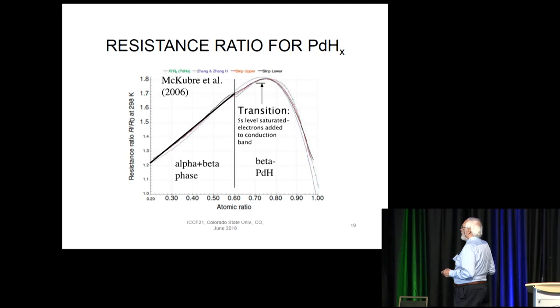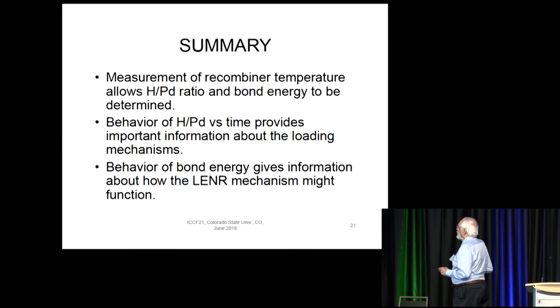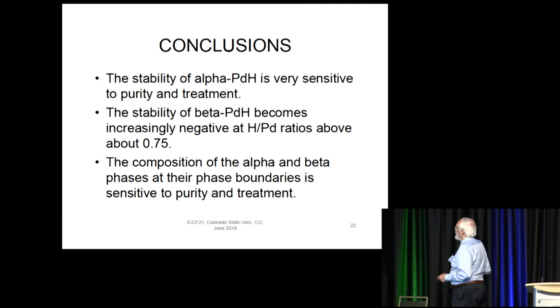So let's summarize very quickly. The addition of hydrogen to beta-palladium hydride above about 0.75 produces increased non-bonding between the palladium and the hydrogen as added electrons enter the conduction band rather than bonding orbits. The measurement of the recombiner temperature allows the ratio and the bond energy to be determined, and it's a trivial measurement. I mean, I didn't hit upon this until fairly recently, and I keep kicking myself because this is so easy now. The loading behavior shows important information about the loading mechanism, and so it's really worth following this loading in detail, and the bond energy gives information about the mechanism and how it might function. The stability of the alpha phase is very sensitive to purity and treatment, but the beta phase not so much. Now, the role of the alpha phase in LENR is still somewhat ambiguous. Thank you very much.